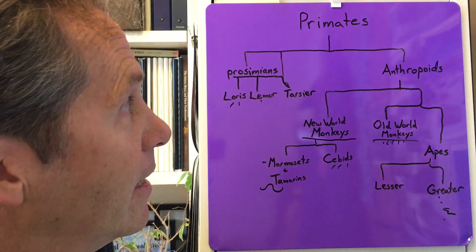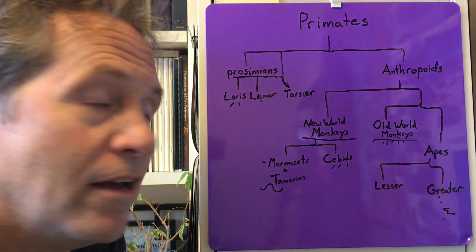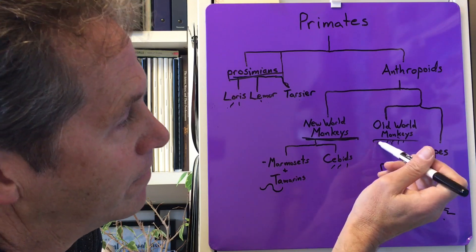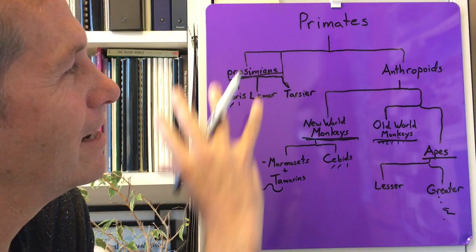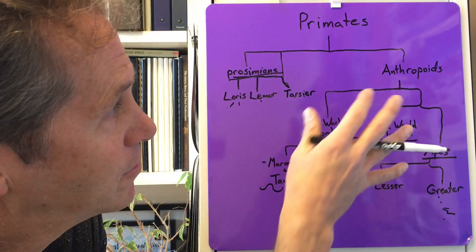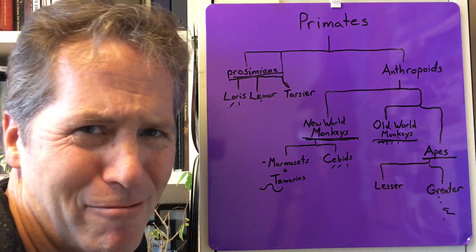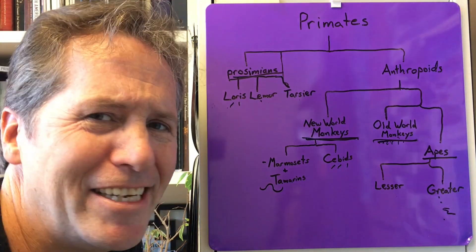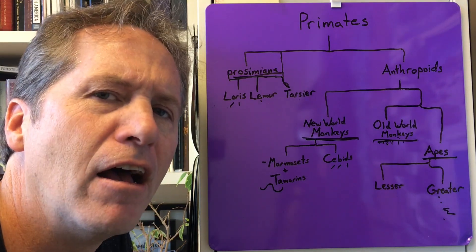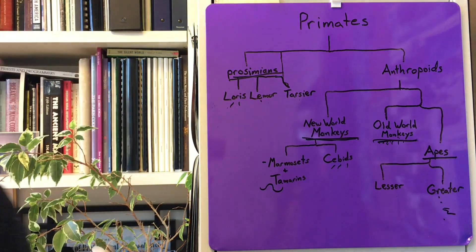There you have the chart of the primates. If you can organize through those four categories and understand the different traits of each, and remember a handful of examples of each, you're in good shape. You want to know all the apes — and you already know them anyway. If I say chimpanzee, you know what that is. So there you have it — the chart.